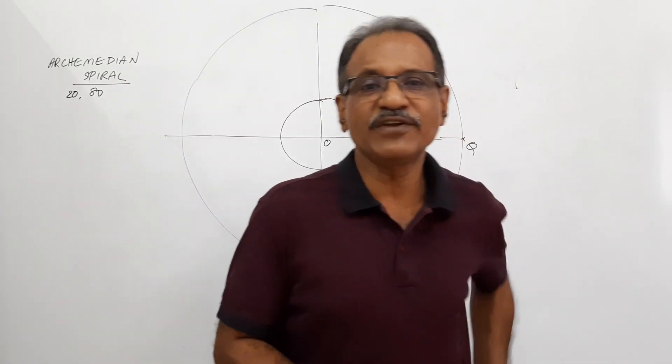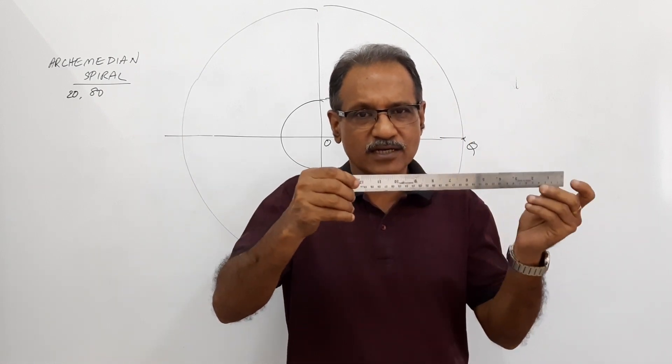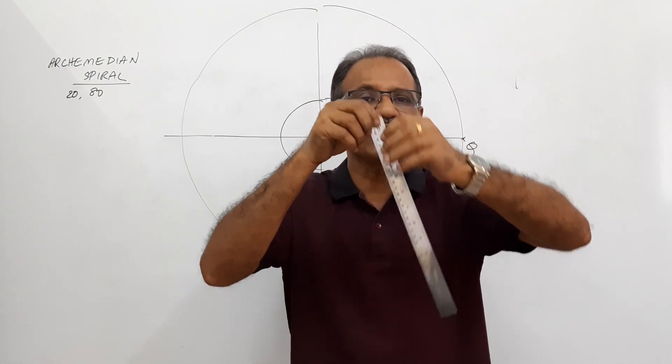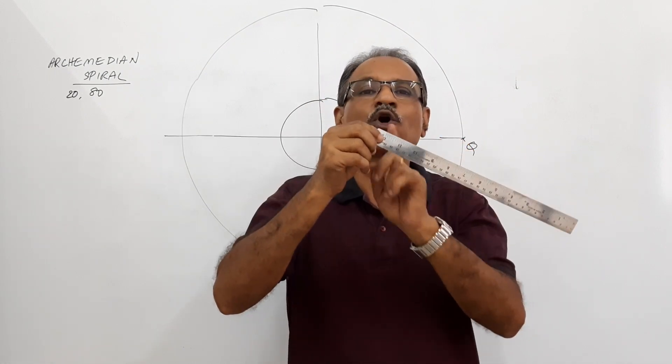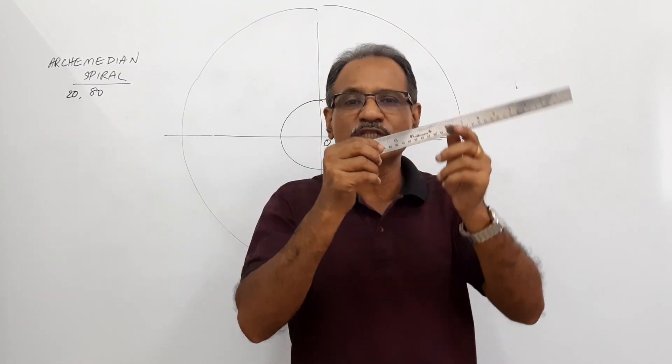Now, coming to the definition of an Archimedean spiral, you think of this link which is rotating at a uniform velocity about this particular point O. We call it as a pole, P-O-L-E. It rotates about this particular point at a uniform velocity.